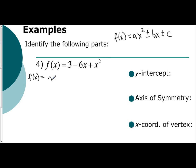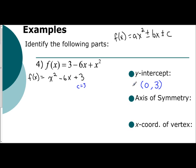Rewritten in standard form: f(x) = x² - 6x + 3. The quadratic term is positive x², the linear term is -6x, and the constant is positive 3. To find the y-intercept, we look at our constant: 3. The y-coordinate of the y-intercept is 3, and the x-coordinate is always 0, so the y-intercept is (0, 3).